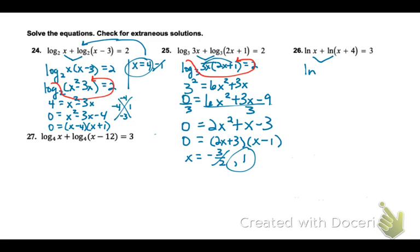But let's look at number 27 here. Now we have some logarithms we can condense. So let's multiply that x across. So we get x squared minus 12x equals 3. Let's switch forms. So let's do the log ride.